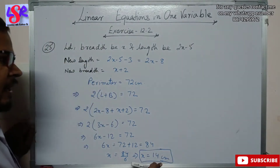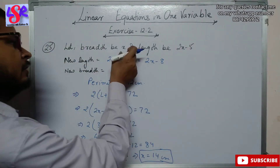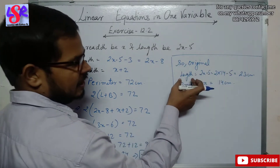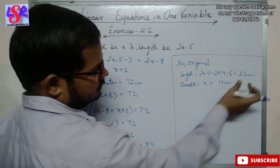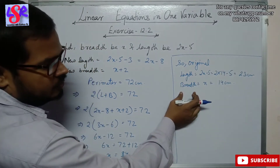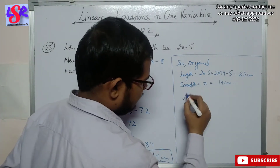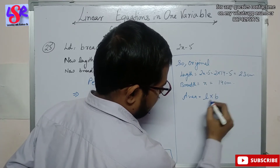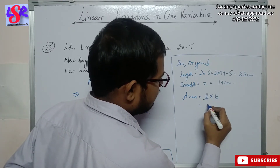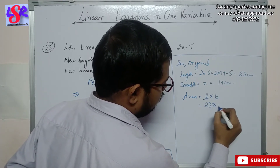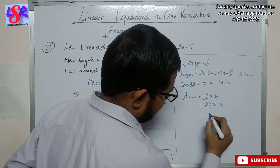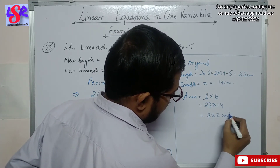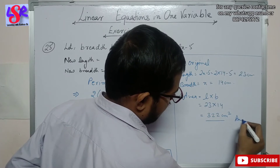Placing the value of x to get the original dimensions: original length equals 2(14) minus 5 equals 23 centimeters, and breadth equals 14 centimeters. The area is length into breadth, that is 23 into 14, which equals 322 centimeters squared as the answer.